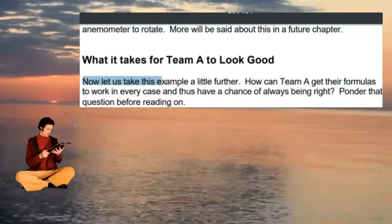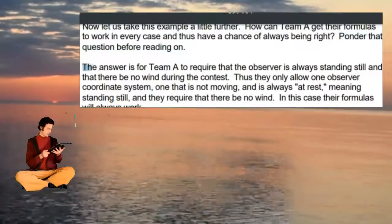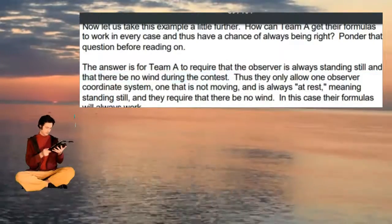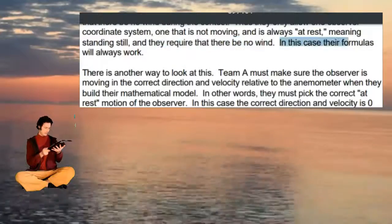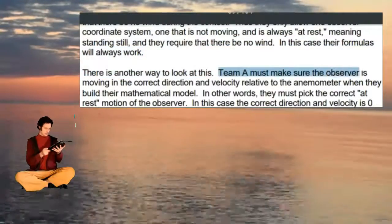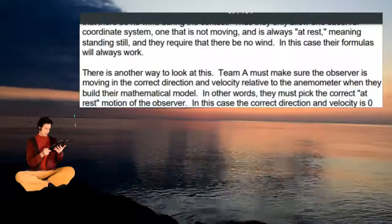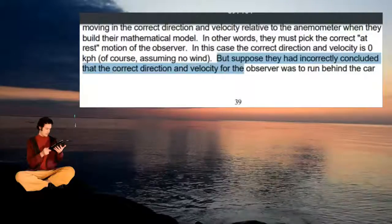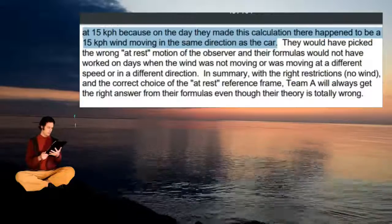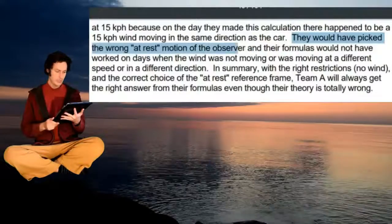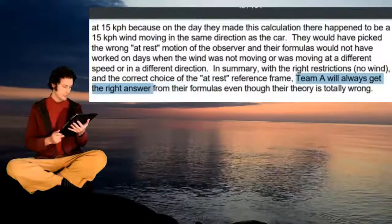What it takes for Team A to look good. How can Team A get their formulas to work in every case? The answer is for Team A to require that the observer is always standing still and that there will be no wind. They will allow only one observer coordinate system — one that is not moving and is always at rest — and they will require that there be no wind. In this case their formulas will always work. Team A must make sure the observer is moving in the correct direction and velocity relative to the anemometer when they build their mathematical model — that is, they must pick the correct at-rest motion of the observer. In this case the correct direction and velocity is 0 kph, assuming no wind. But if they had incorrectly concluded the correct observer velocity was 15 kph behind the car — because on that day there happened to be a 15 kph wind — their formulas would not work on days when the wind was absent or different. With the right restrictions of no wind and the correct at-rest reference frame, Team A will always get the right answer for their formulas, even though their theory is totally wrong.